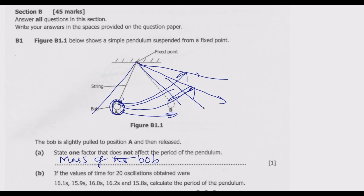The factors that do affect the period of the pendulum are: first, the period is inversely proportional to the acceleration due to gravity; and second, the period is directly proportional to the length of the string. So the longer the string, the longer the period, and the higher the gravitational acceleration, the shorter the period. Take note of these key points and you will be able to answer any question on the pendulum.